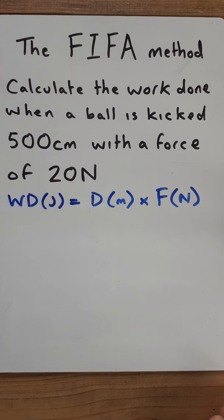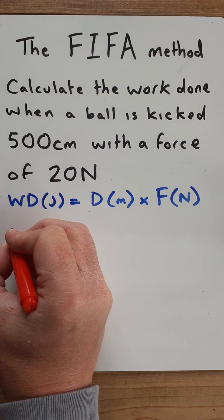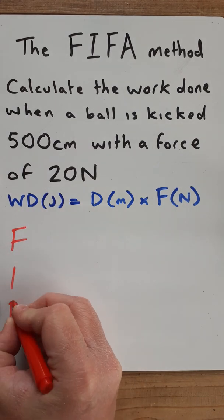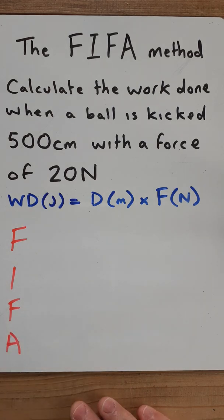Sometimes you might need to remember that and sometimes you might be given it. So what's the FIFA method? Well the FIFA method is this. When you get a question like this what I'd like you to do is to write FIFA underneath the question. So in the space that you're given to answer it you write FIFA.